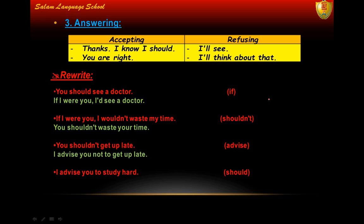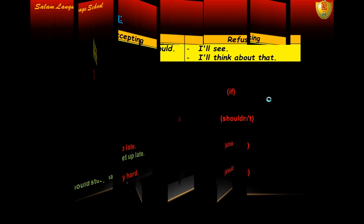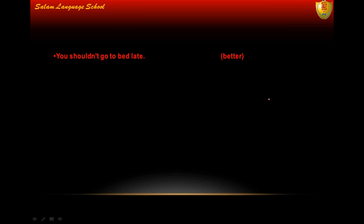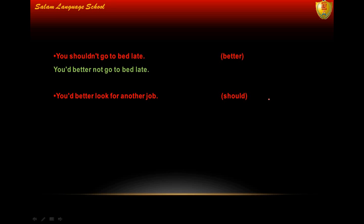The third sentence: 'You shouldn't get up late' — rewrite using the verb 'advise.' The answer: I advise you not to get up late. The next sentence is the opposite: 'I advise you to study hard' — rewrite using 'should.' The answer: You should study hard. Then: 'You shouldn't go to bed late' — rewrite using 'better.' The answer: You had better not go to bed late. The opposite: 'You had better look for another job' — rewrite using 'should.' Answer: You should look for another job.